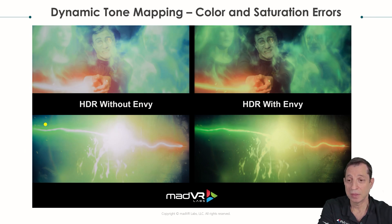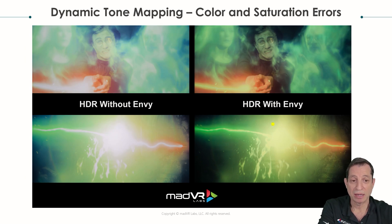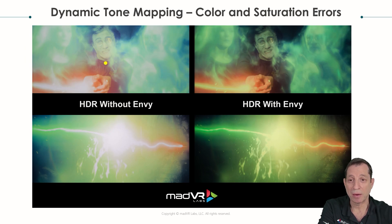You can see the green is crushed out when you compare it to the side with the Envy, as well as all the detail that is getting lost. Or you can see all the clarity and detail on Harry's face versus everything looking blown out and washed over. This is the power of dynamic tone mapping.